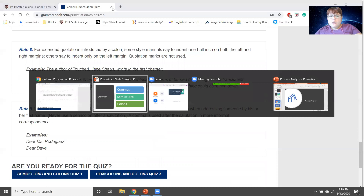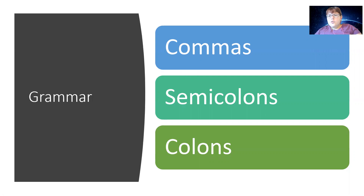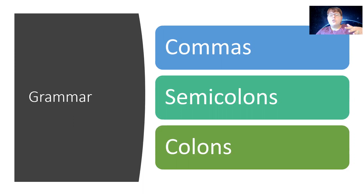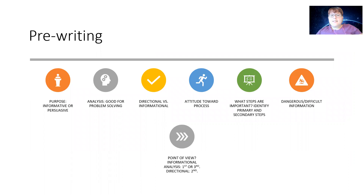You don't have to memorize every single rule by heart. The key is: if both parts can stand alone, use a semicolon or a comma with a conjunction. If one part cannot stand alone, it's more situation-dependent — for example, we don't put commas before 'because' when the independent clause comes first.